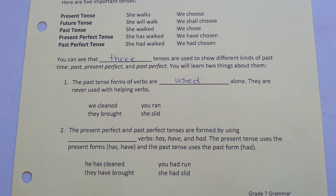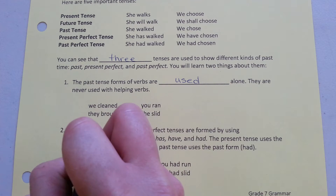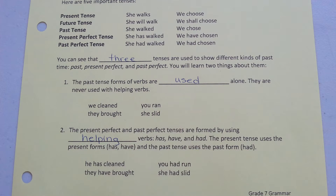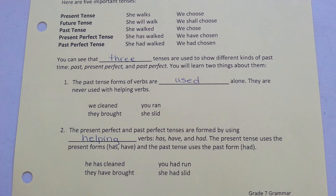The present perfect and the past perfect tenses are formed by using helping verbs: has, have, and had. The present perfect tense uses the present forms has and have, and the past perfect tense uses the past form had. So: he has cleared and they have brought — that's the present perfect. You had run and she had slid — those are the past perfect tenses.